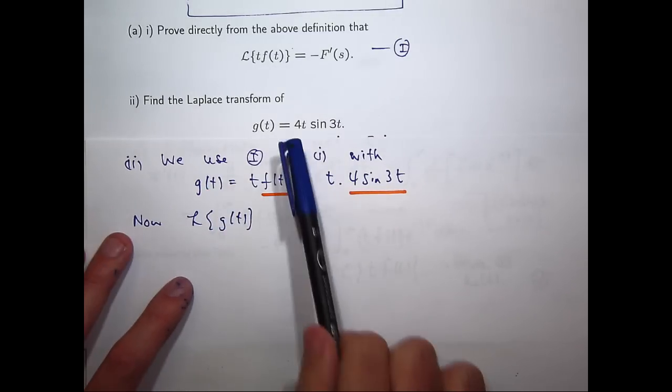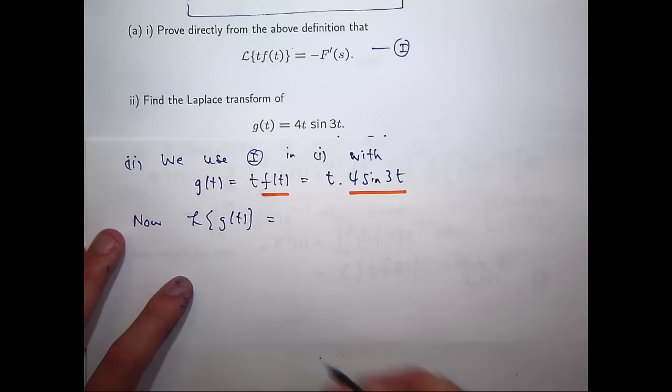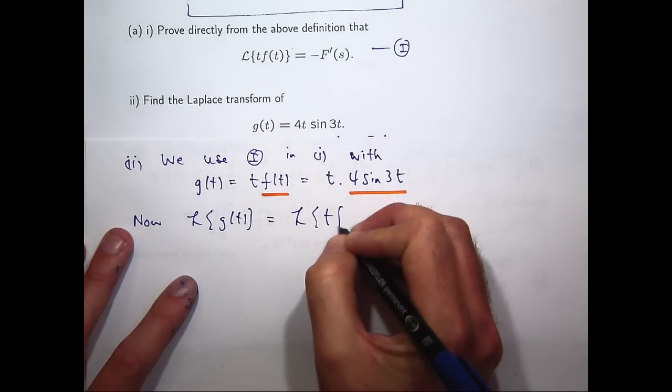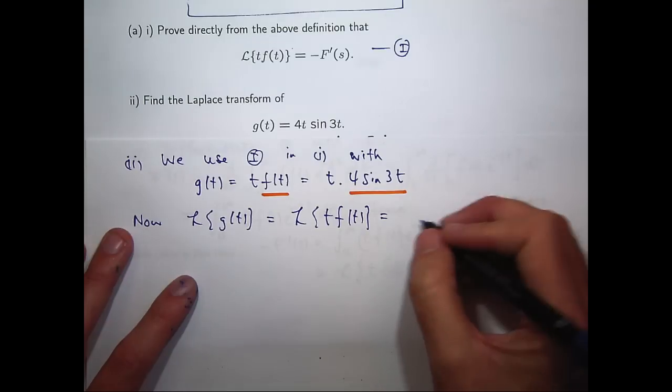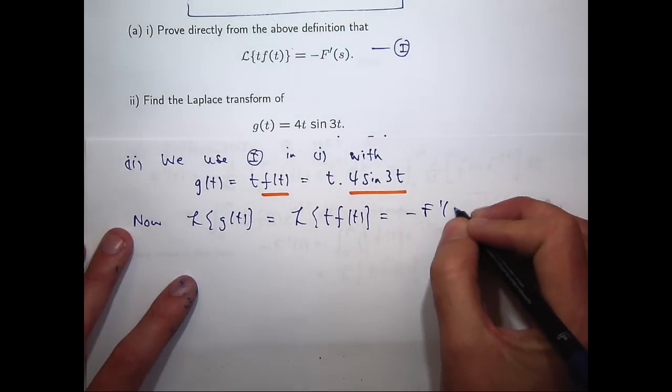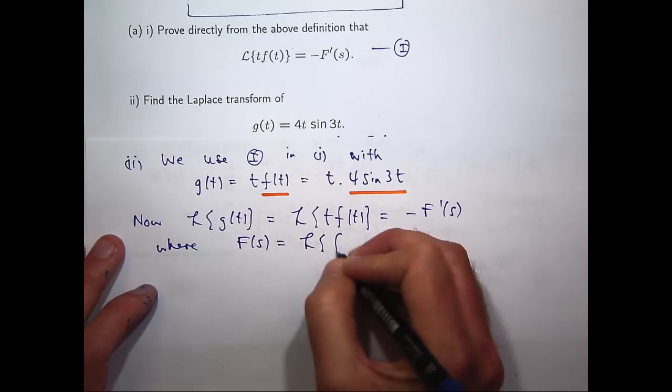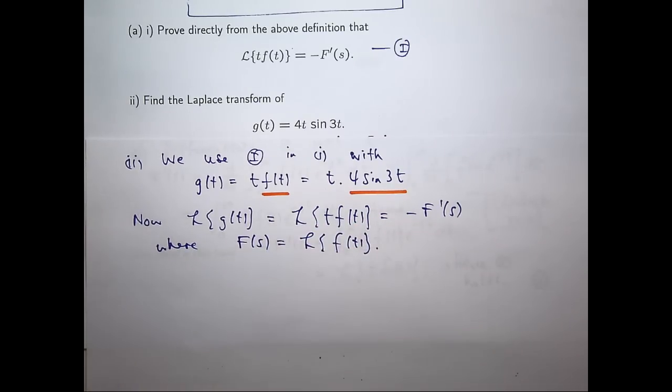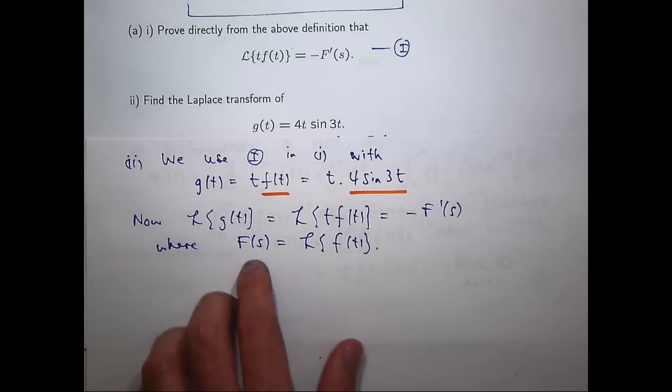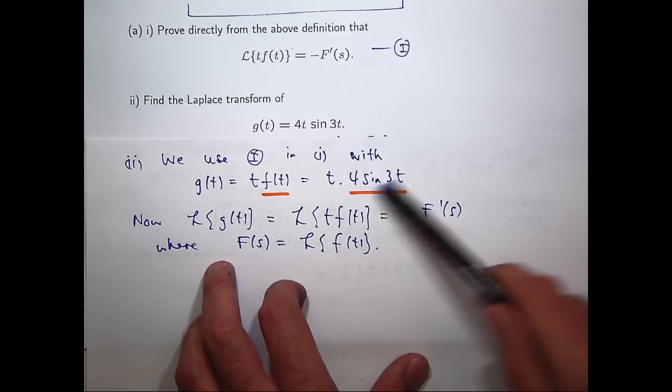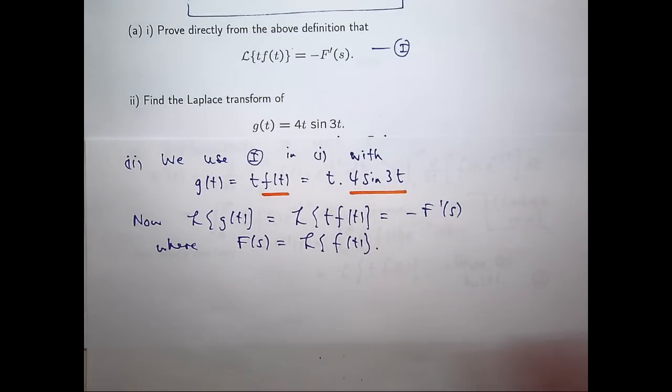So, what we want to do is take the Laplace transform of this. So what this means is, from a practical point of view, first of all, let's get big F of s by calculating the transform of this 4 sine 3t. Then we'll differentiate that with respect to s and then just multiply it by negative 1.